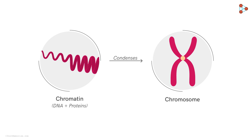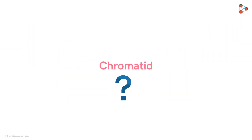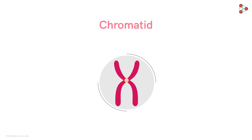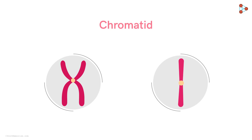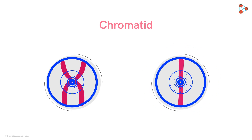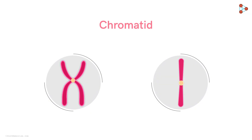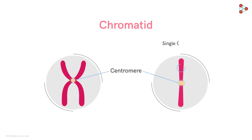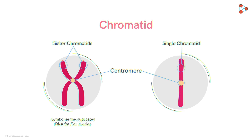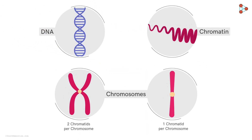There is one more term we need to know: the chromatid. The arm-like structures attached to the central bulge — that is, the centromere — are called chromatids. In simple words, the thread-like strands attached to the centromere are called chromatids. A single chromosome can have one chromatid, while another can have two sister chromatids attached at this common point. Two sister chromatids symbolize the duplicated DNA — meaning the DNA which is duplicated for cell division is attached to its paternal copy before the actual division.